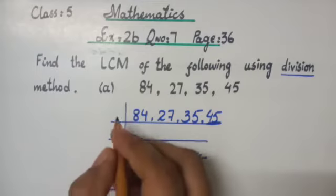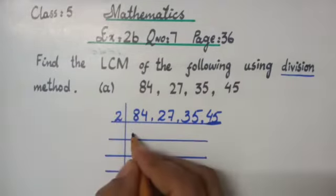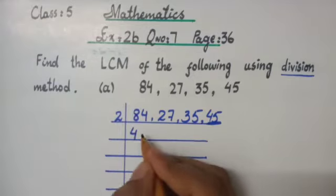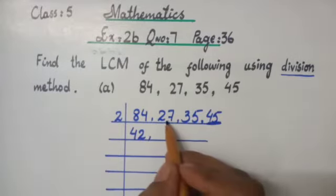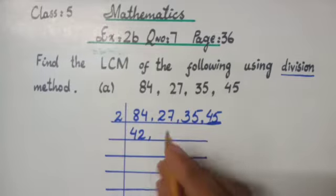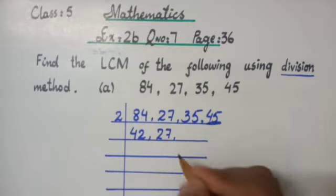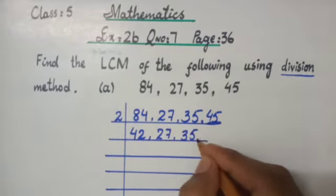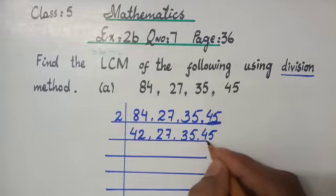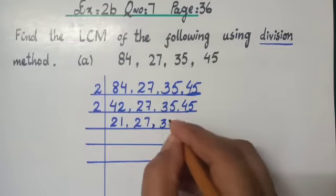Let us divide first with 2. This is the first time we are going to divide 84 by 2. 2, 4 are 8 and 2, 2 are 4, giving us 42. Then, we know 27 is not an even number, that's why it cannot be divided by 2. The numbers that cannot be divided by 2 are copied as it is. 35 cannot be divided by 2. 45 I have to copy as it is. These numbers will be copied as it is.